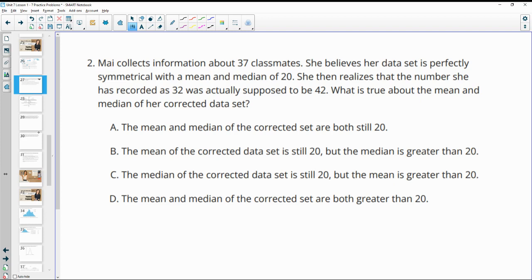Number two, Mai collects information about 37 classmates. She believes her data set is perfectly symmetrical with a mean and a median of 20. She then realizes that the number she has recorded as 32 was actually 42. So what's true about the mean and median of her corrected set of data.